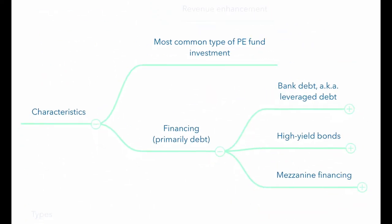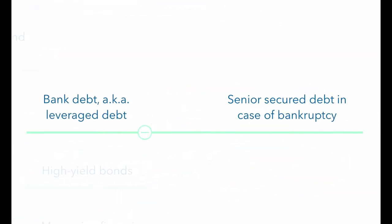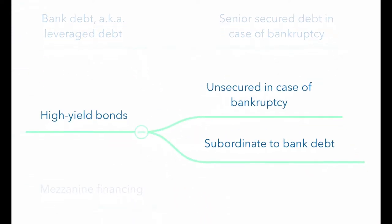LBOs are the most common type of private equity fund investment. The fund's purchase of the portfolio company is primarily through debt. This may be bank debt, also known as leveraged debt, high yield bonds, or mezzanine financing. One key difference is that leveraged loans or bank debt are generally senior secured debt, whereas bonds are unsecured in the case of bankruptcy.